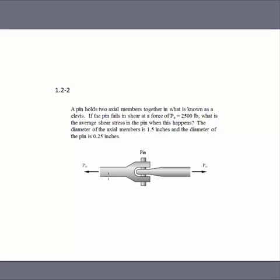The diameter of the axial members is 1.5 inches, and the diameter of the pin is 0.25 inches. There's a little extra information given in this problem that we don't need. It is the diameter of the axial members.